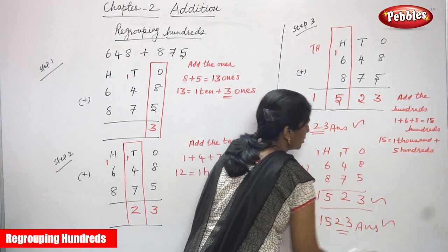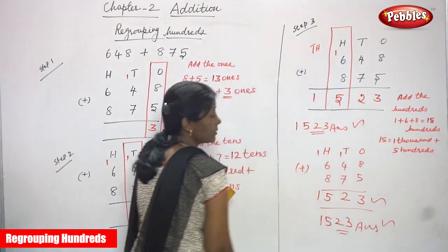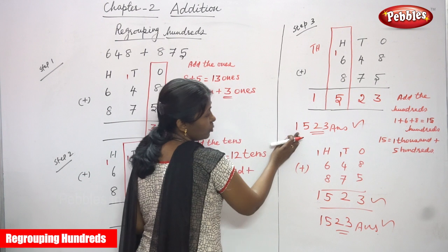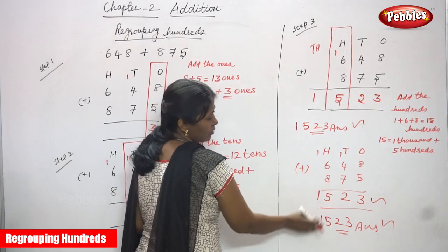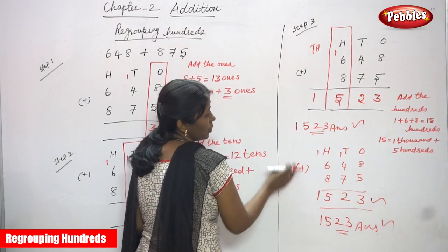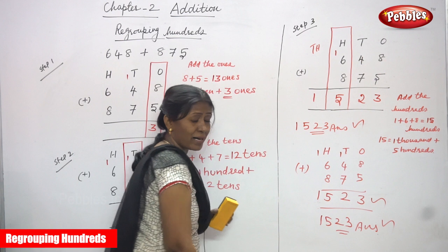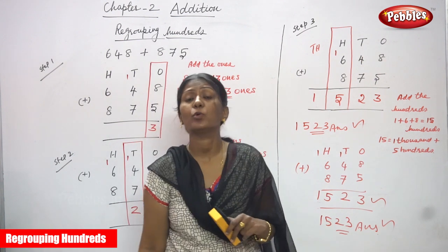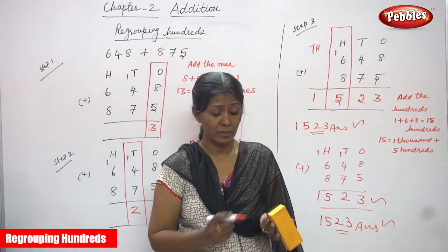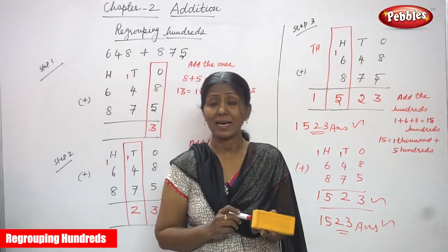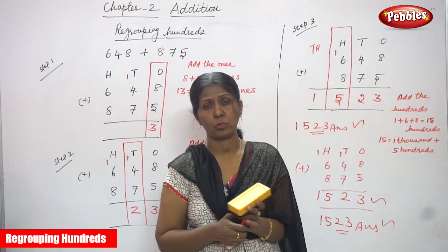Both answers are correct. This is regrouping hundreds and also the normal addition. If you add using both methods, you can get the same answer. I think you understand the regrouping hundreds method and also the normal addition.